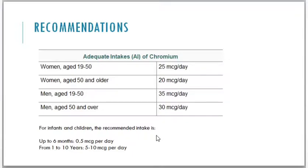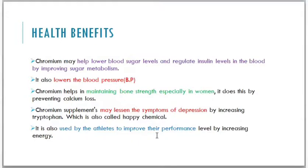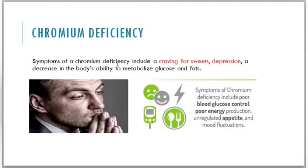Chromium helps lower blood sugar levels and regulate insulin by improving sugar metabolism. It also lowers blood pressure and helps maintain bone strength, especially in women, by preventing calcium loss. Chromium supplements may lessen symptoms of depression by increasing tryptophan, known as the happy chemical, and it is also used by athletes to improve performance by increasing energy. Symptoms of chromium deficiency include craving sweets, depression, and decreased ability to metabolize glucose and fats, as well as poor glucose levels, poor energy production, unregulated appetite, and mood fluctuations.